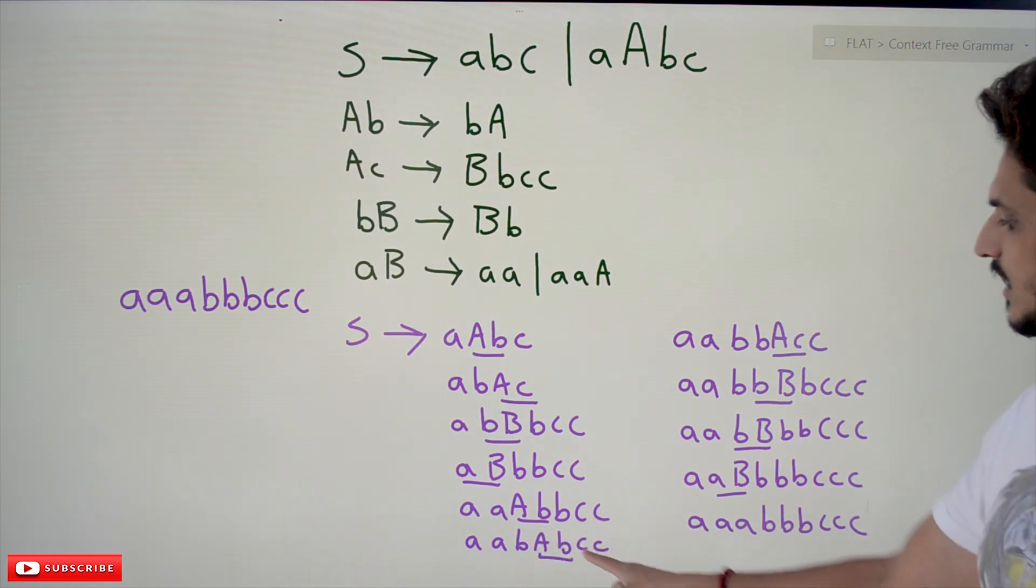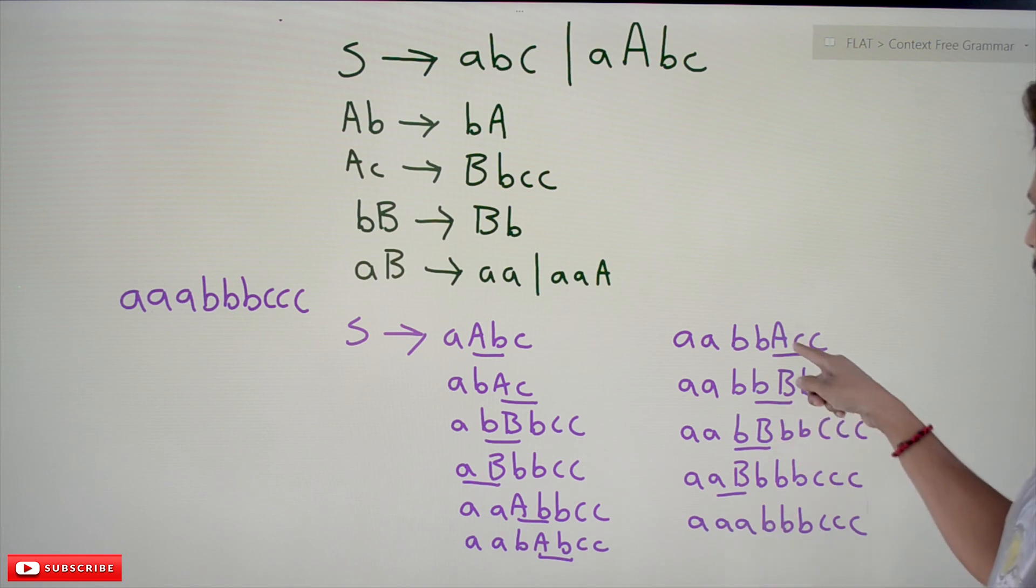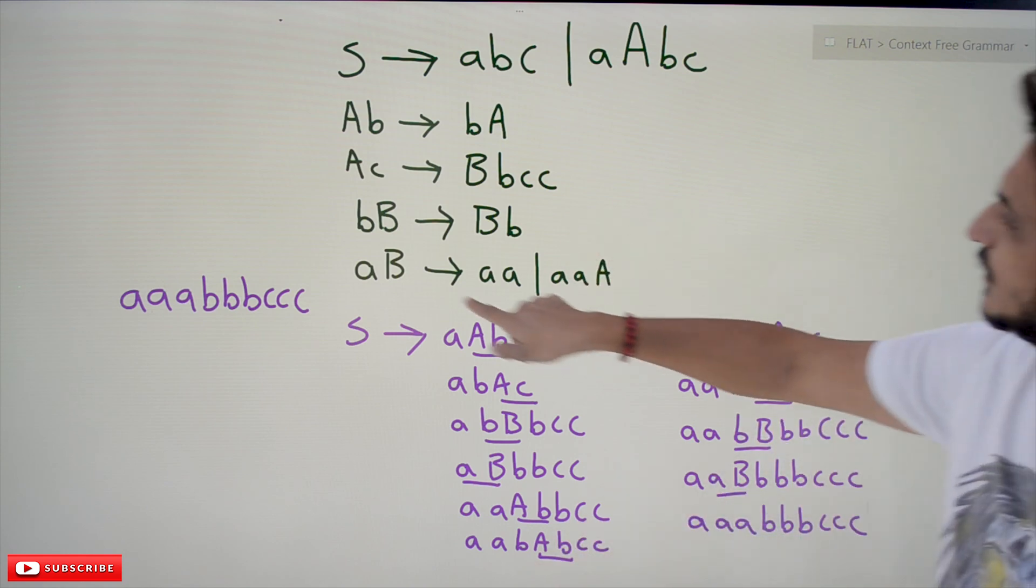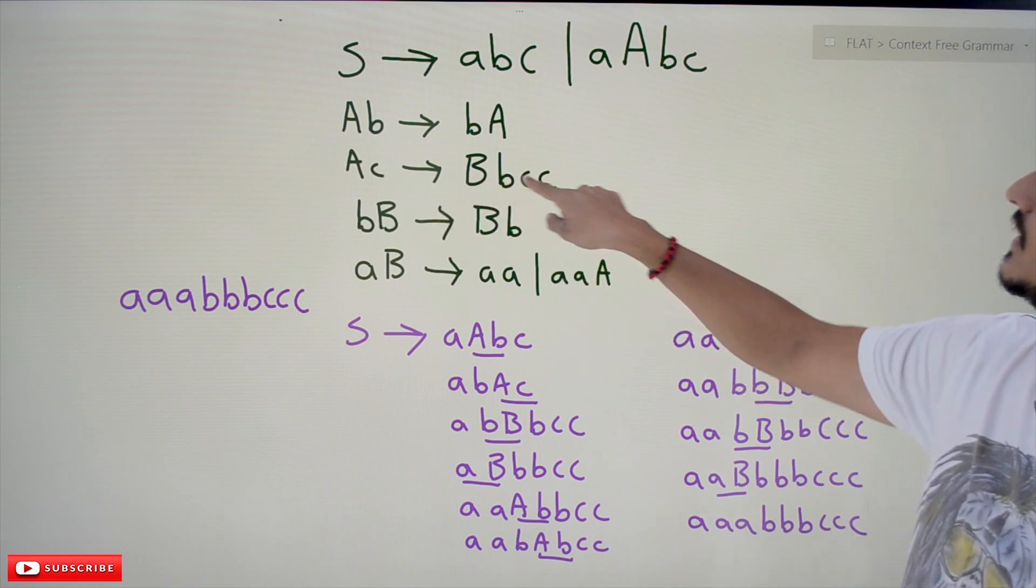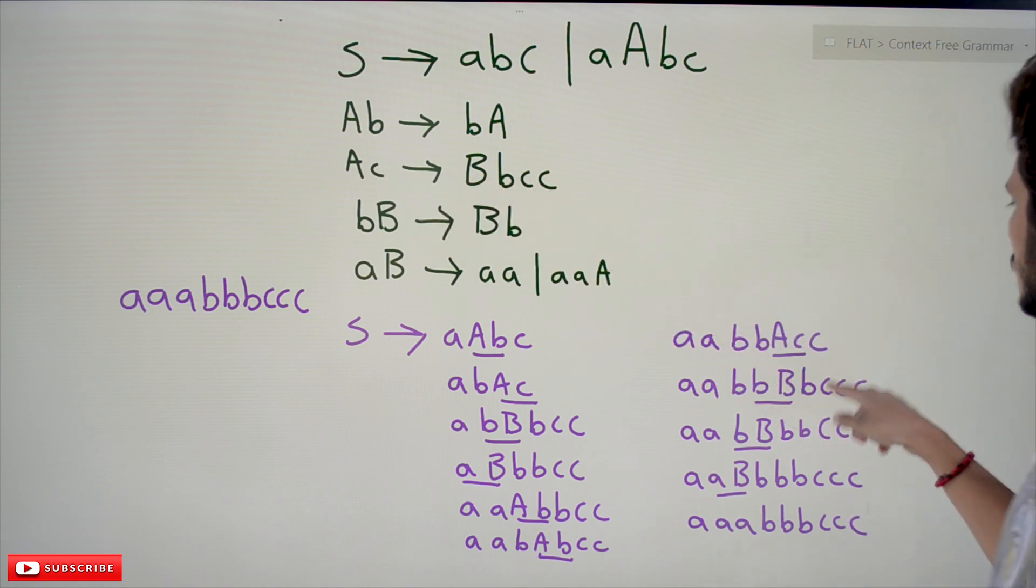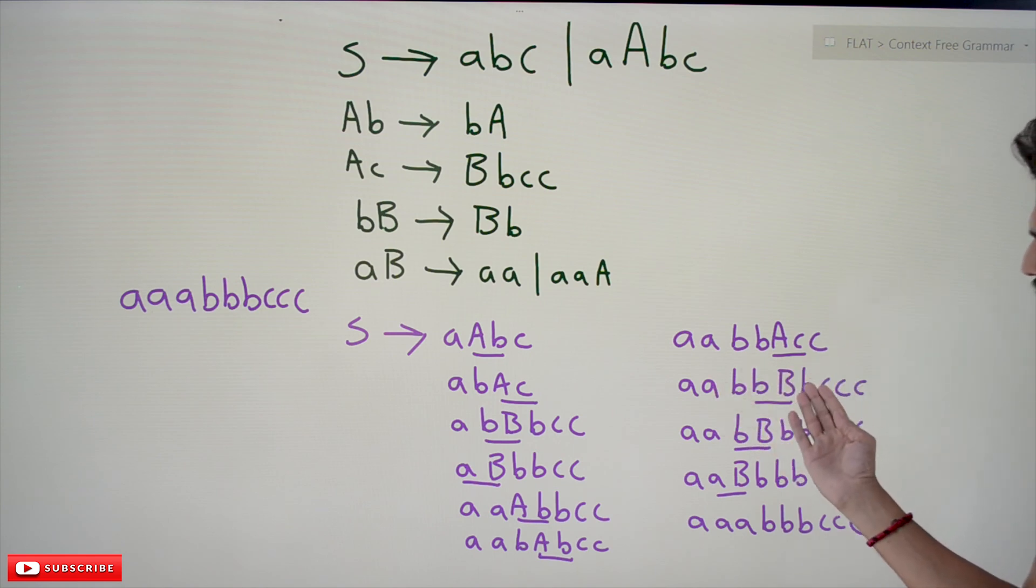Then bC becomes BbcC. Whenever you have Ac, we convert it to BbcC. Now we move this B towards the left.